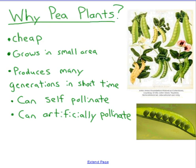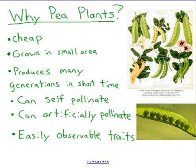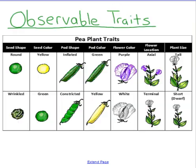Two more reasons: self-pollination and artificial pollination. In the plant world, pollination means reproduction. Mendel was able to artificially pollinate these plants — he could take the pollen and put it on specific plants he wanted, which is easier than making cats or mice reproduce. Plants can also self-pollinate, reproducing just with themselves since they have both sperm and egg. Finally, they have easily observable traits.